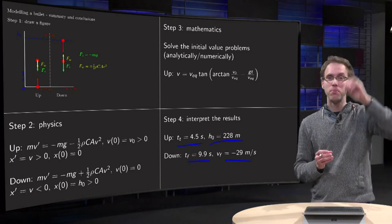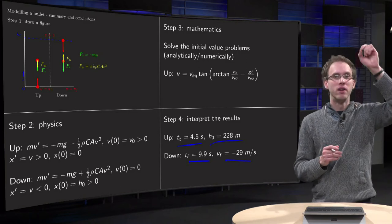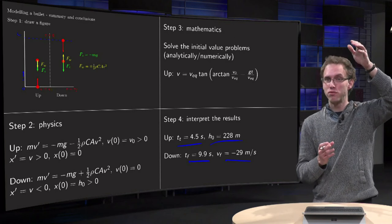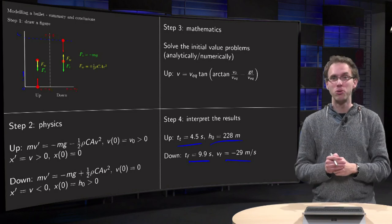Because if you start, you have a very high velocity, so you go fast up. If you are up, you start with velocity zero. And due to this big friction force, you will never reach this big velocity again. So it takes longer to go down.